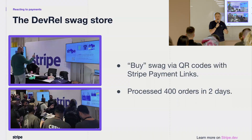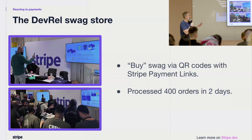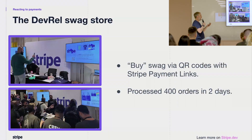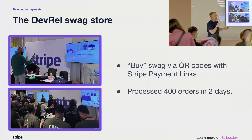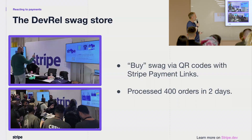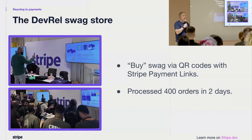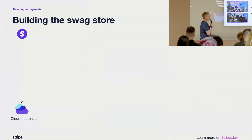We did this by way of a swag store. We had various products from the Stripe swag merchandise store — things like T-shirts, books, stickers — where attendees could scan a QR code to load a payment link. They would enter their payment info into the payment link; it's in a sandbox, so there's no actual money transacting. They would come away with a confirmation page and a piece of swag, and we would get to talk to them about all the technology they just used — how it integrates with Amazon EventBridge, how we use webhooks, and so forth.